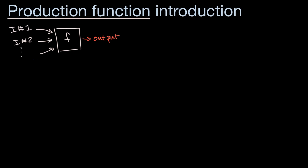We can also describe it a little bit more mathematically. Where we could say the output, often using the letter Q in economic circles, is going to be a function of the various inputs. So input number one, input number two, and you could have as many inputs as is necessary to produce that good.